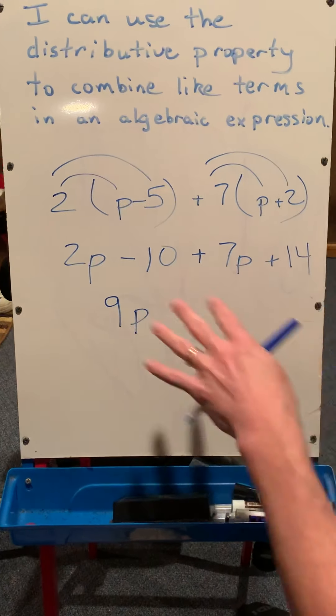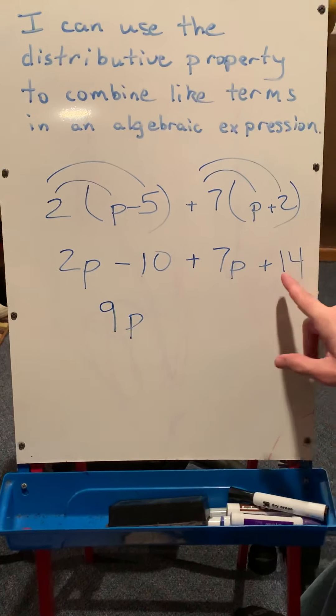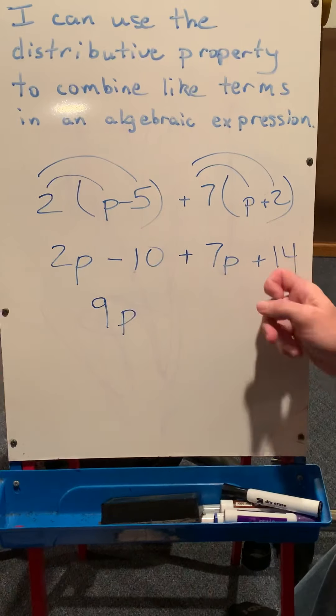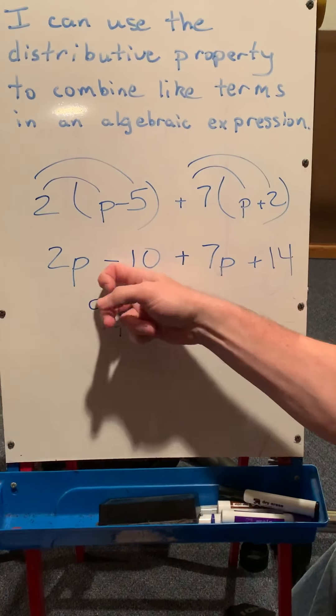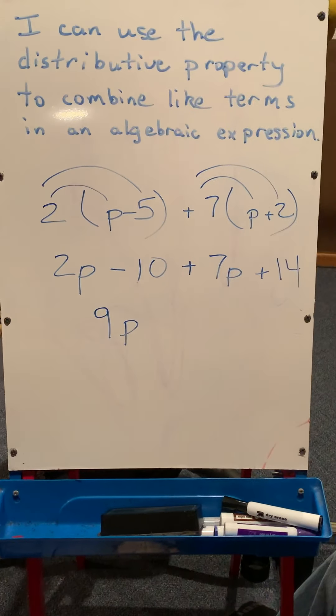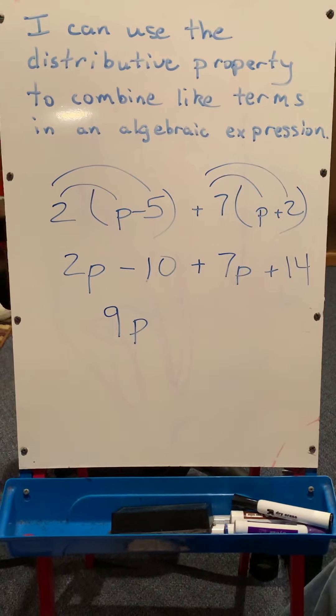Or, when you're combining them, you don't necessarily have to go in this order. I could say I have a positive 14 and a negative 10, or takeaway 10. So you can look at this as like 14, take away that 10, which is a positive 4.